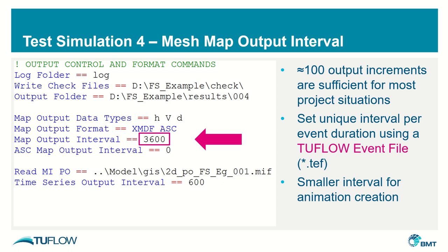If you are running a project that deals with multiple event durations, you would really benefit from specifying the map output interval command in your 2Flow event file, so you can define a unique value for each event duration. That way 2Flow will automatically assign the right interval depending on the length of your event. The only time I vary from the 100-increment recommendation is when creating animations, where I'll decrease the output interval to get a smoother result.